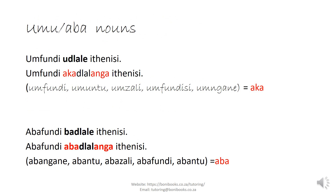Moving to the um-aba noun group: umfunde ulale itenis. Because umfunde is a human being, we always say aga for people. So umfunde aga lalanga. In the plural: abafunde balale becomes abafunde abalala. Because it's aba, we say abafunde abalala.